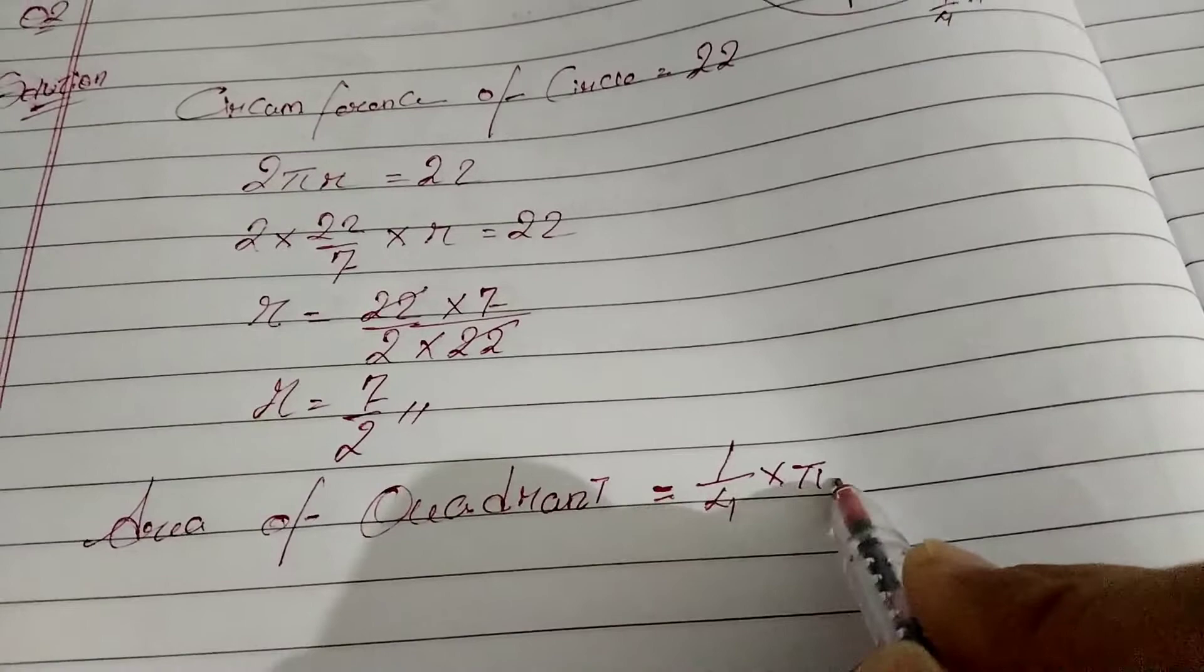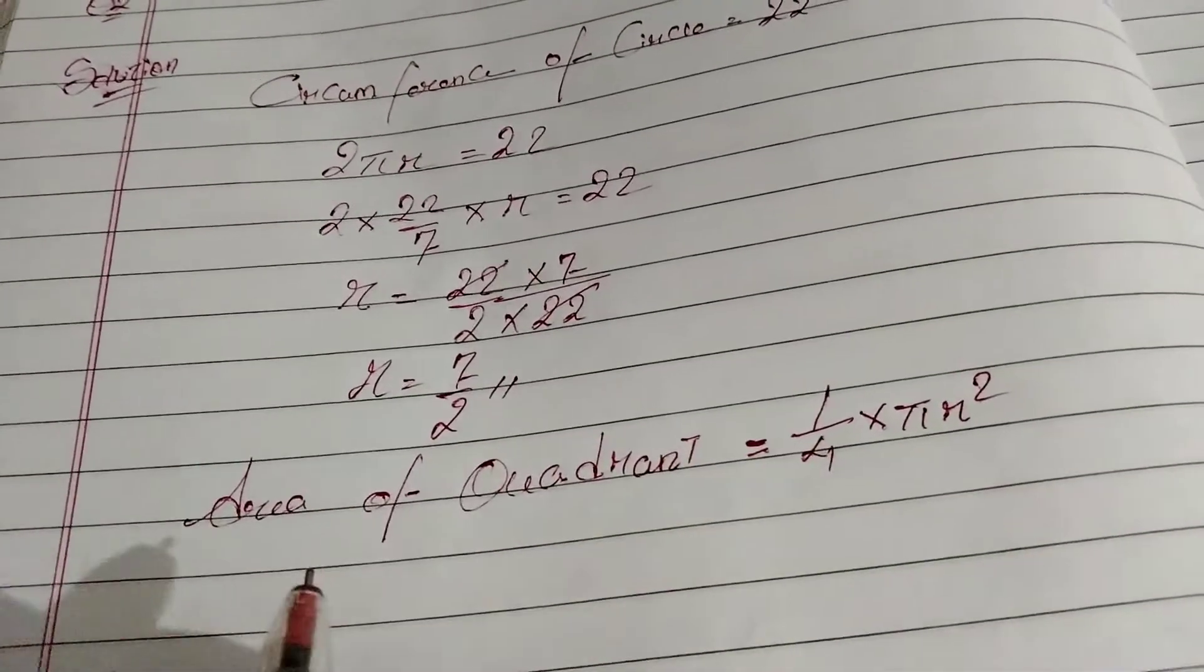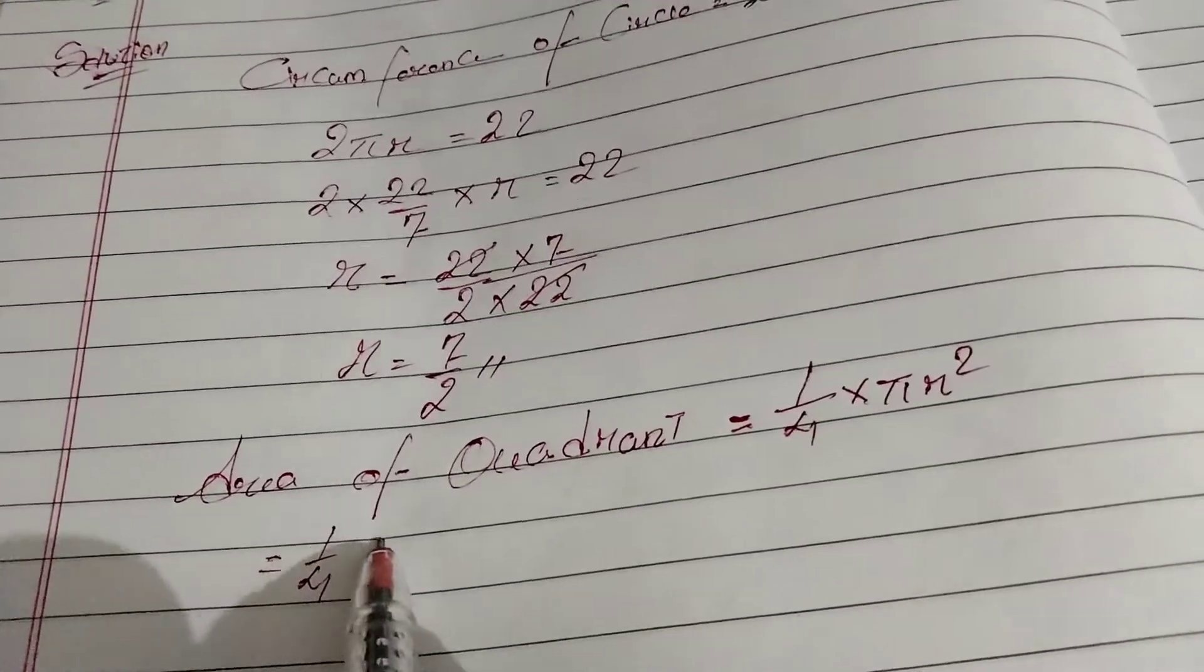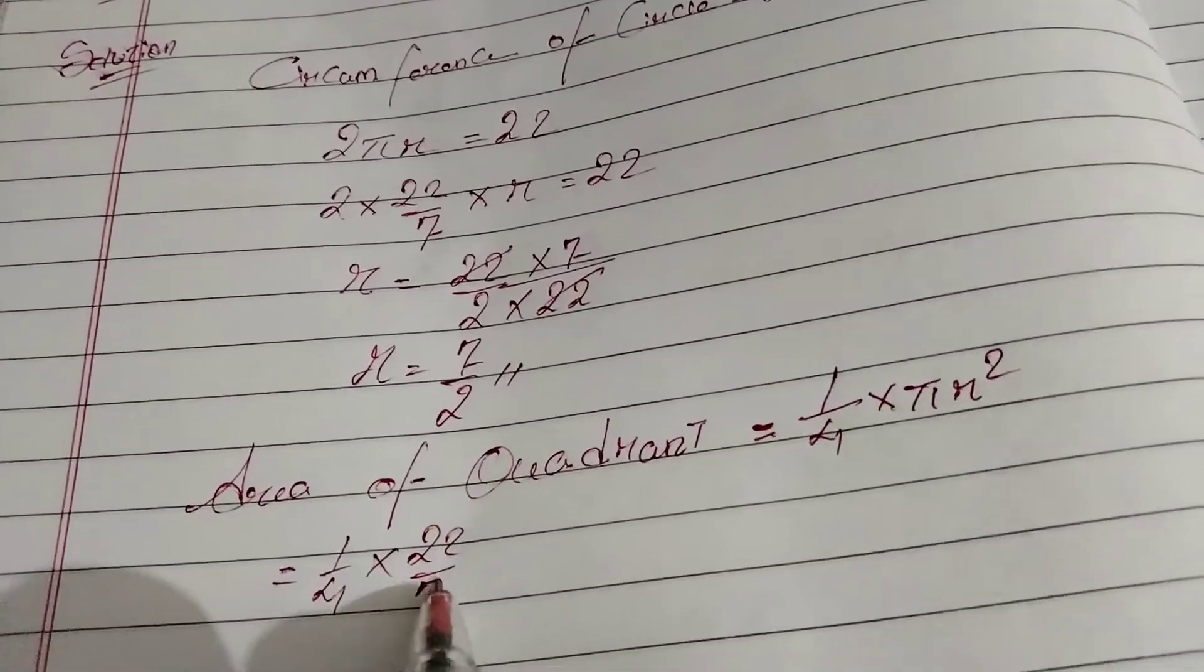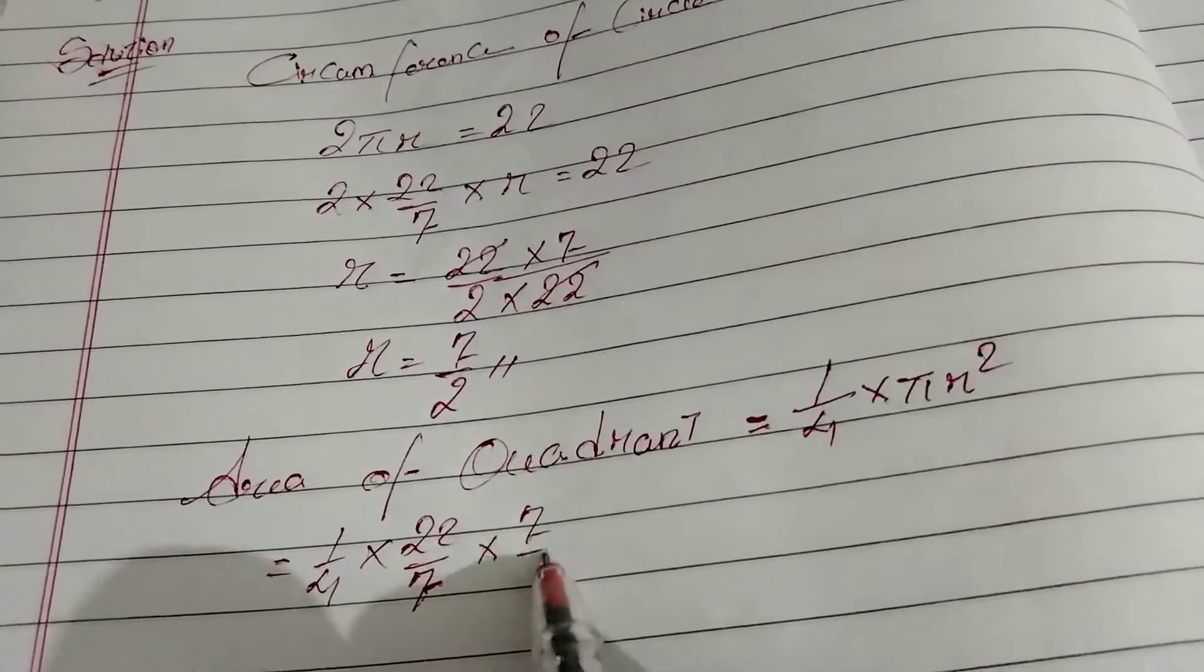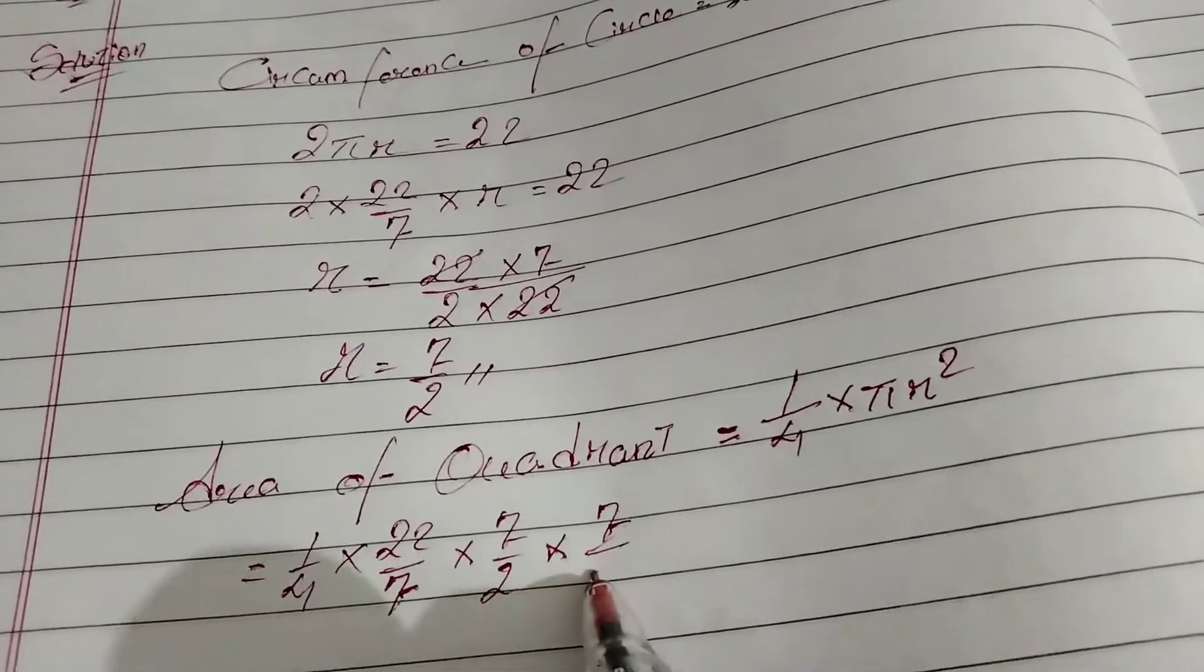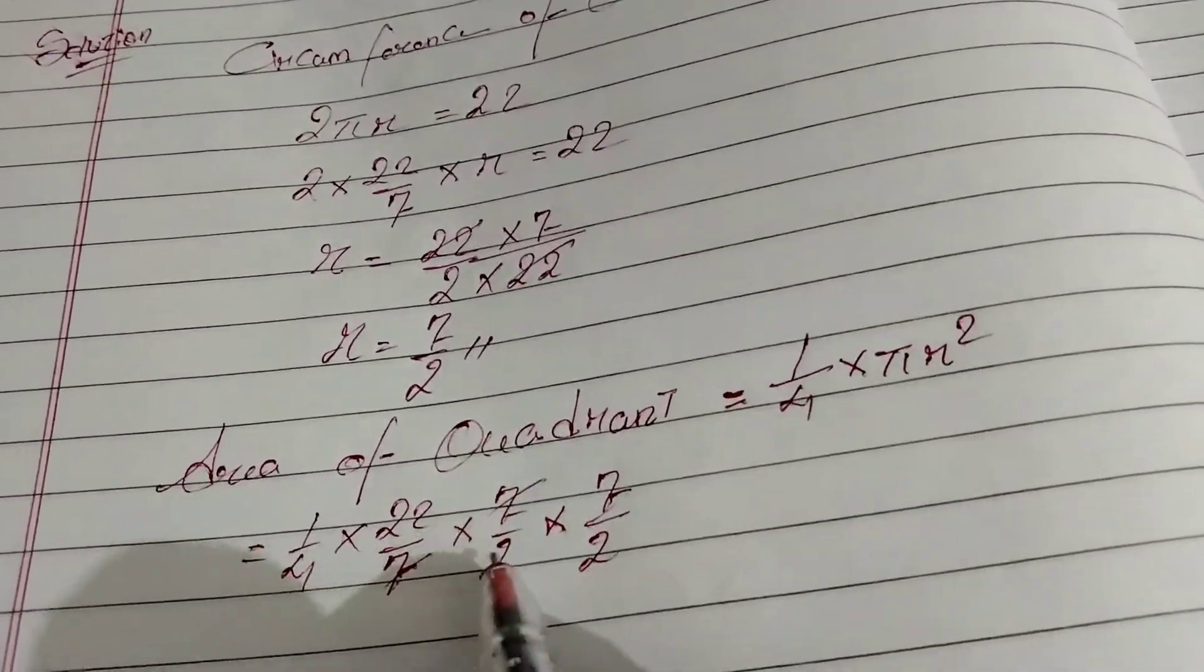Pi is 22 by 7, r square. So 1 by 4 into pi is 22 by 7 into radius we got 7 by 2 into 7 by 2. We can remove this, we can remove this...